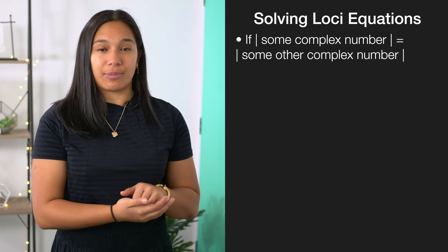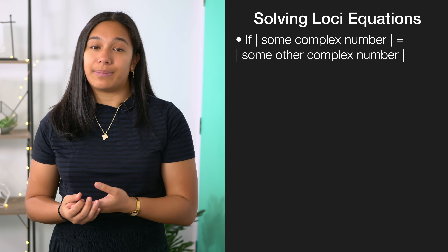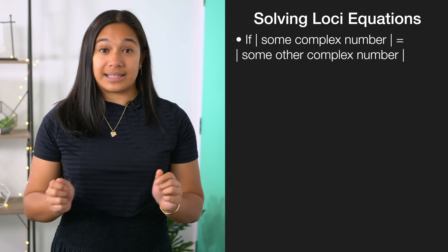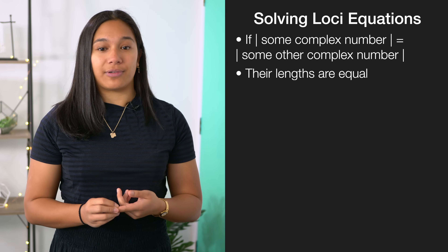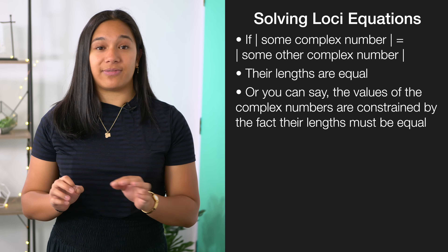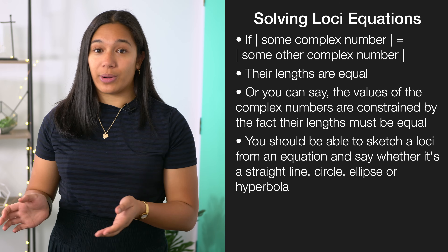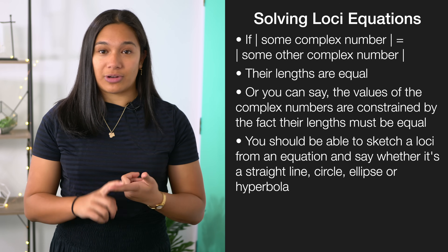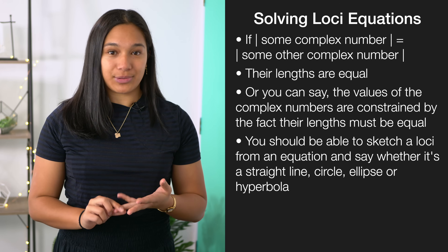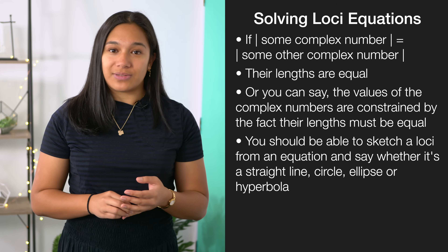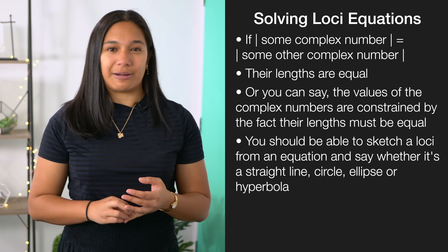For loci equations, you need to understand what they're saying — from there you should be able to solve any loci equation with algebra. For example, if the absolute value of one complex number equals the absolute value of another, you know their lengths are equal. You should be able to sketch loci from an equation and identify whether it is a straight line, a circle, an ellipse or a hyperbola. Once you've practiced all these forms of equations, you should be able to nail any question.